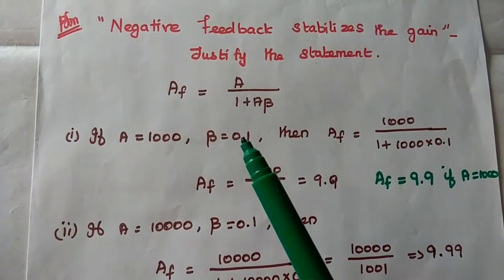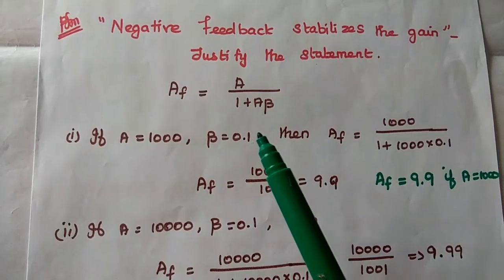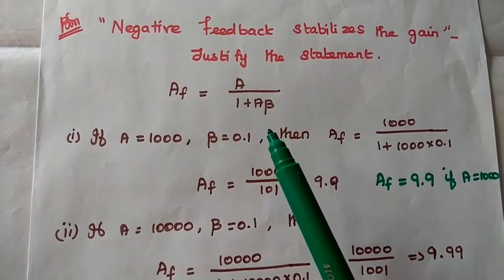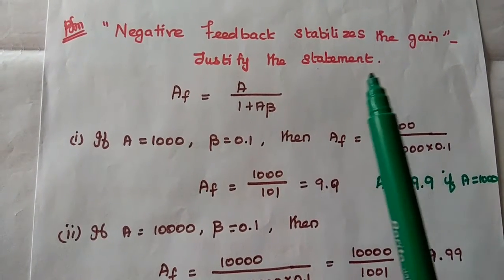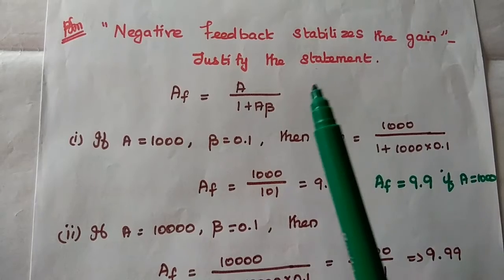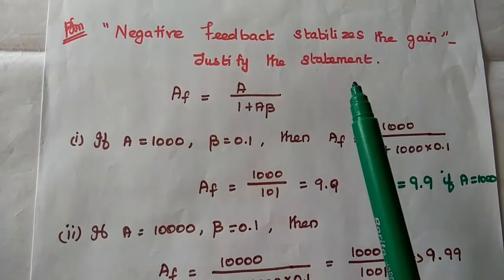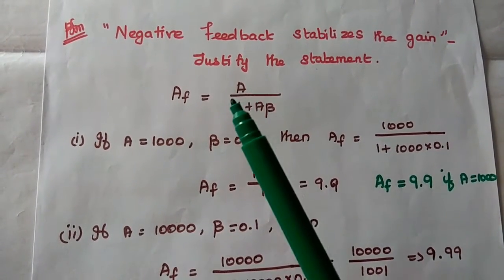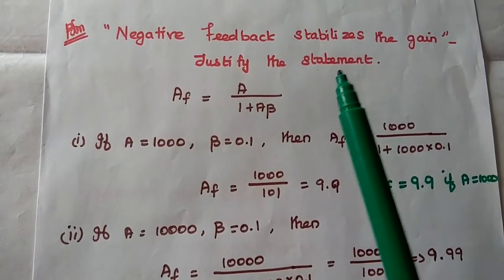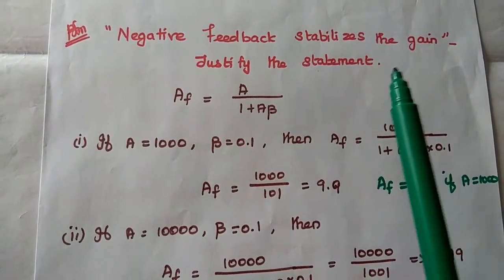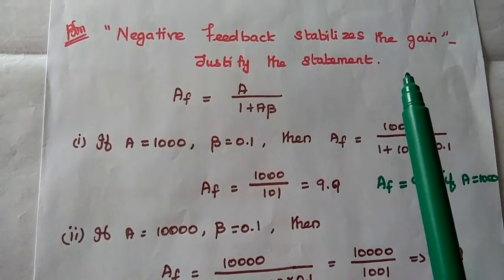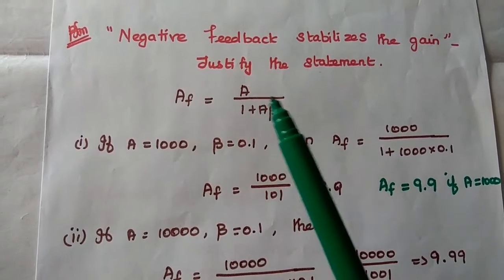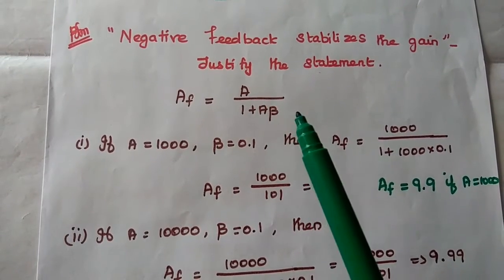The next problem is very important and is asked frequently in university exams: 'Negative feedback stabilizes the gain — justify the statement.' We are going to prove this using the formula AF = A / (1 + A·β).